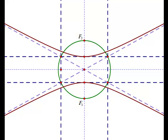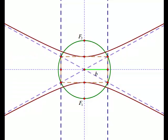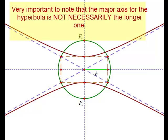Since the minor axis is on the x-axis in this case, we will label half the length of the minor axis the distance B. Make sure that you notice that, unlike ellipses, the major axis is not necessarily the longer one for hyperbolas.